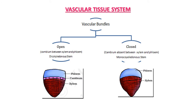Hello students, in continuity of chapter 6, today we are going to study about vascular tissue system and anatomy of dicot and monocot plants. First of all, we are starting with vascular tissue system. If we talk about composition of vascular tissue system in plants, it is actually made up of complex tissues — that is phloem and xylem — and xylem and phloem together form the vascular bundle in plants.